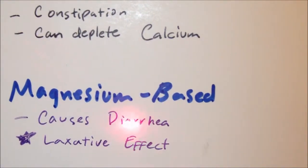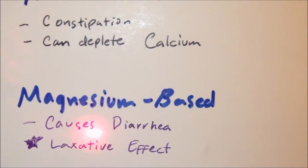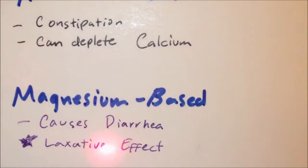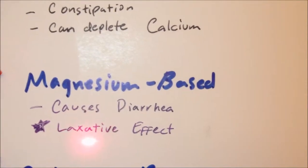On the other hand, magnesium-based antacids, such as milk of magnesia, causes diarrhea. And this is due to the fact of it having a high amount of magnesium content, and magnesium has a laxative effect, so it causes the person to have diarrhea.